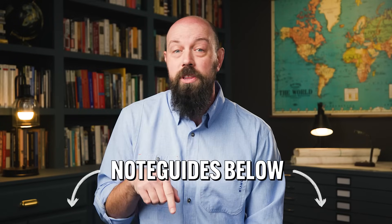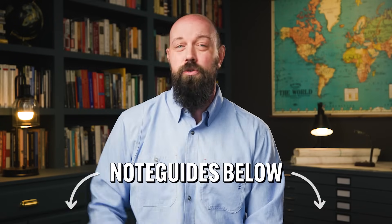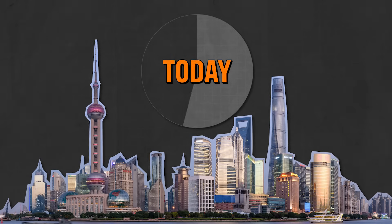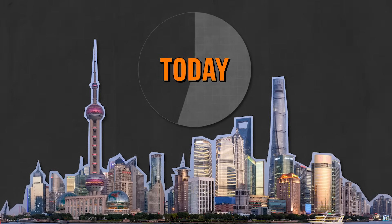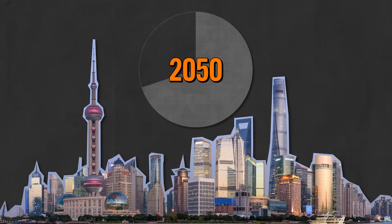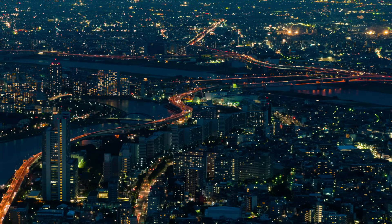By the way, if you want note guides to follow along with this video and all my videos, then check that link in the description. Anyway, this is important to know since right now a little over half the world's population lives in cities. Furthermore, by 2050, the United Nations estimates that nearly 70% of the world's population will live in cities. And if you think about that for half a second, you begin to understand why that reality makes urban governments and city planners a little twitchy.